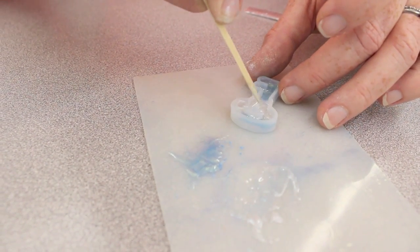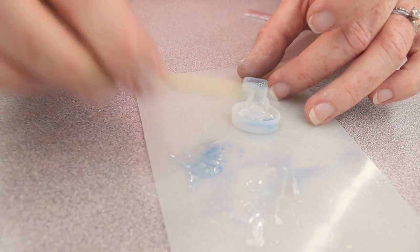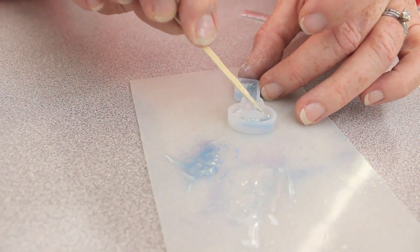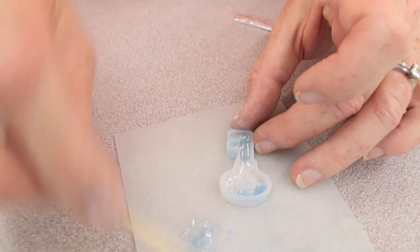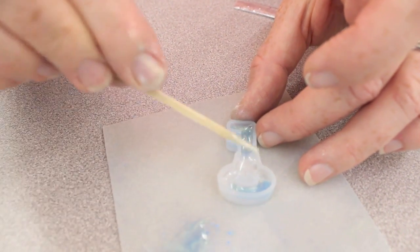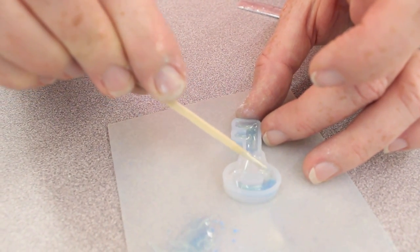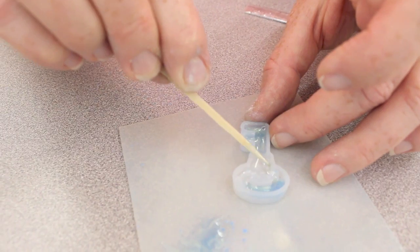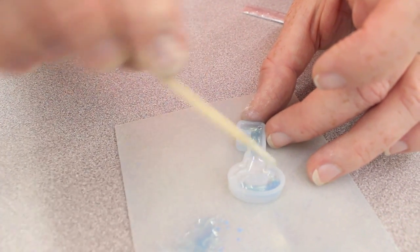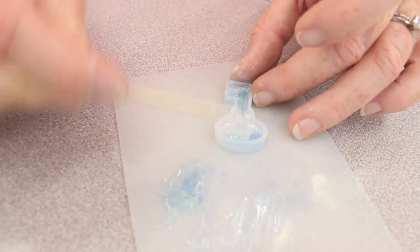It dries within minutes when you use the UV lamp, which is awesome. So you can get your projects done really quickly. The two-part resin, when I've used it, it usually takes at least eight hours to dry. So I really like this one. My projects are completed quickly.